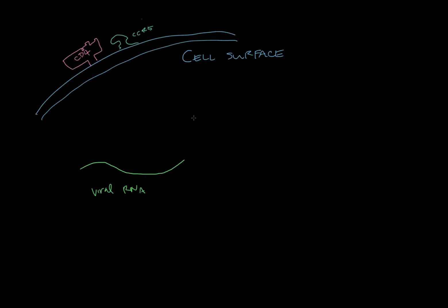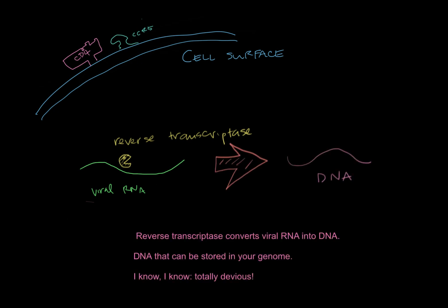Now you have this viral RNA in the host cell. There's this devious enzyme called reverse transcriptase — so named because it does things backwards from the usual dogma — that translates this viral RNA into something that looks a lot more like self. It turns it into DNA, DNA that can be stored in your genome.